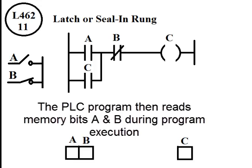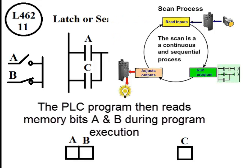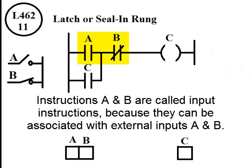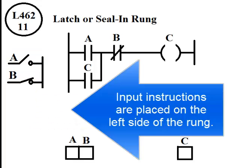The PLC program then reads memory bits A and B during program execution. Instructions A and B are called input instructions because they can be associated with external inputs A and B. Input instructions are placed on the left side of the rung.